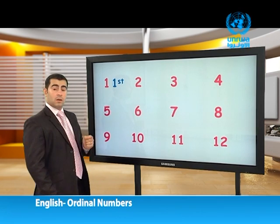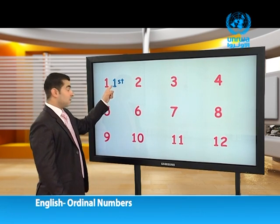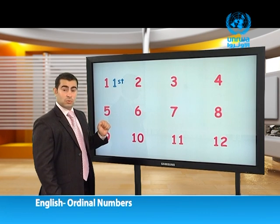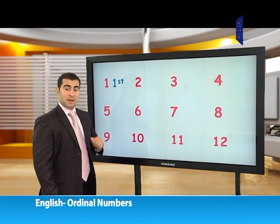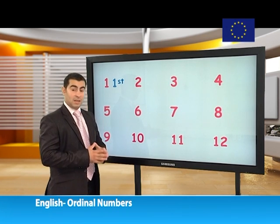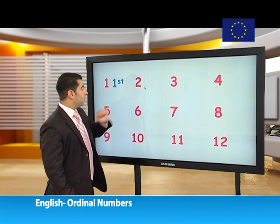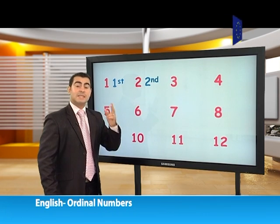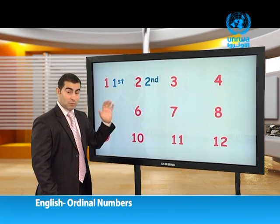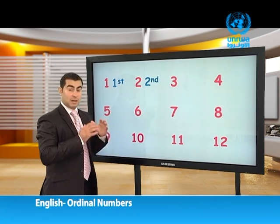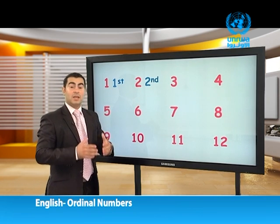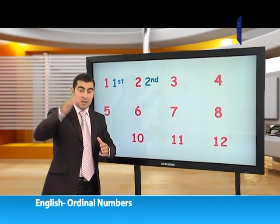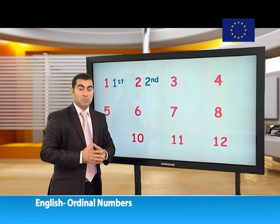One means 'واحد', but for ordinal numbers we say 'first' — الأول. We added 'ST' to the number to make 'first.' Now look at two — 'اثنين.' When we say the second, it becomes 'second' — الثاني.